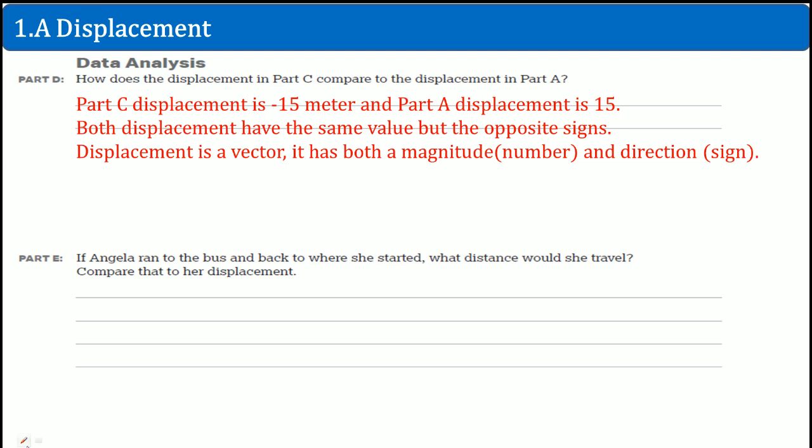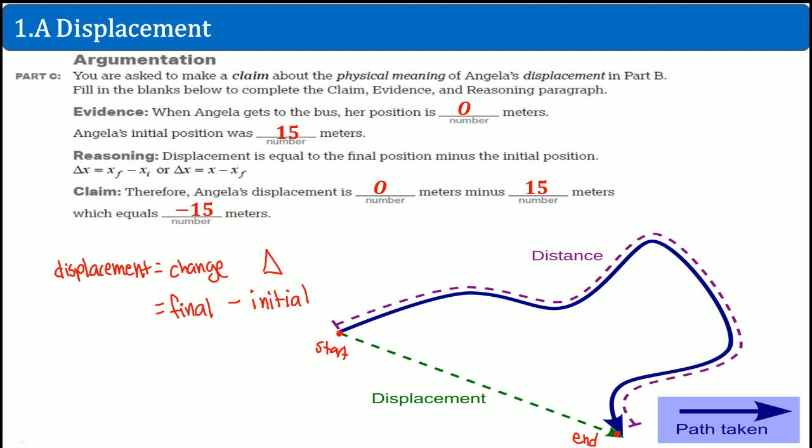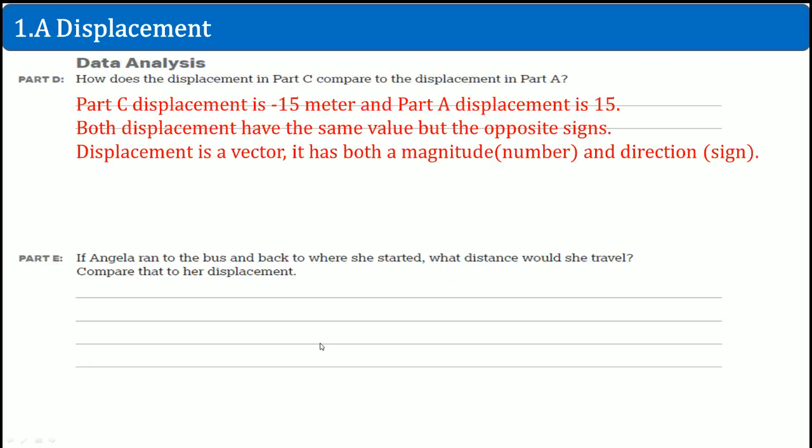Part E: If Angelica ran to the bus and back to where she started, what distance did she travel compared to her displacement? This is Angelica, and this is the bus. If she ran to the bus and then back, you have to take the complete total of that. But her displacement is just final minus initial. Think about that.